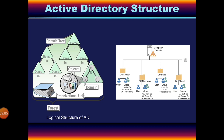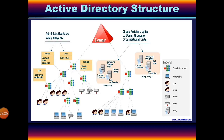Objects create किये जाते हैं organizational unit के अंदर, organizational unit create किया जाता है domain के अंदर। Different domains को मिलाकर एक tree बनाते हैं और different trees को मिलाकर एक forest create किया जाता है। एक domain के अंदर organizational units होते हैं, और organizational units के अंदर workstations, users, groups, printers, shares होते हैं और group policies applied to users, groups or organizational units।